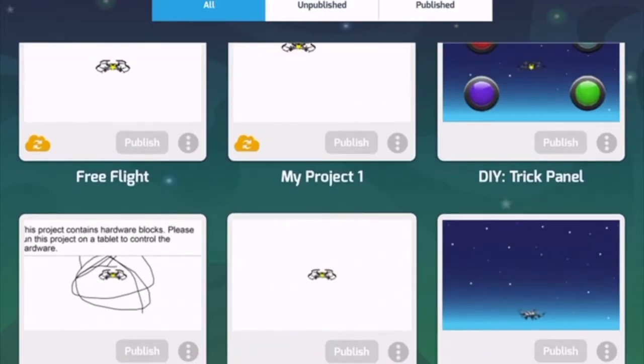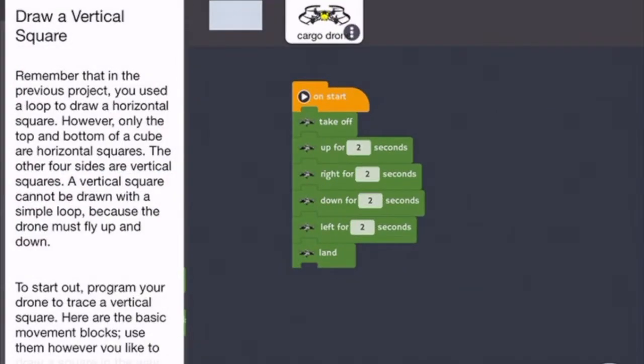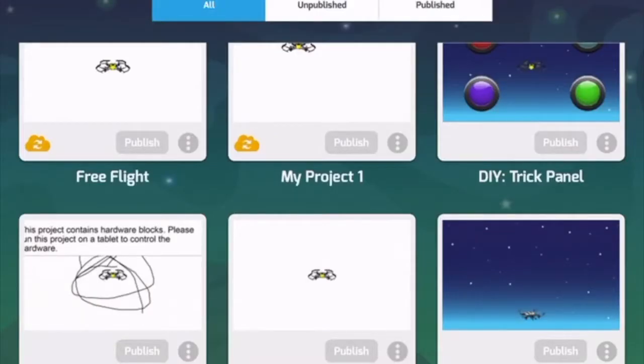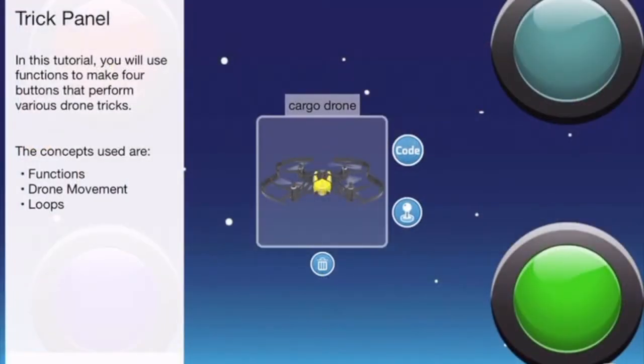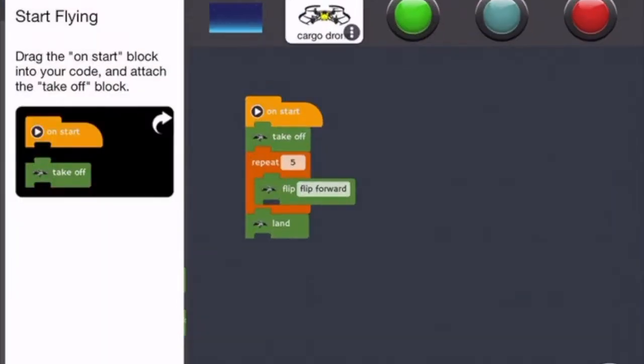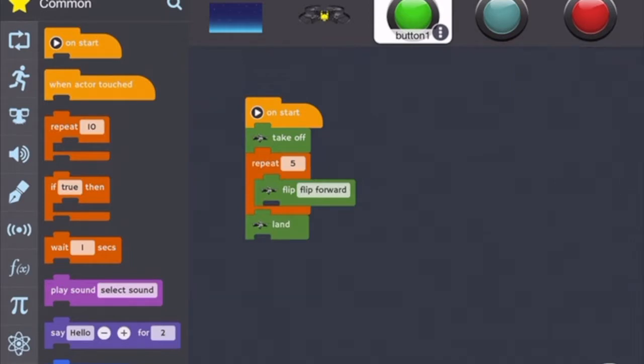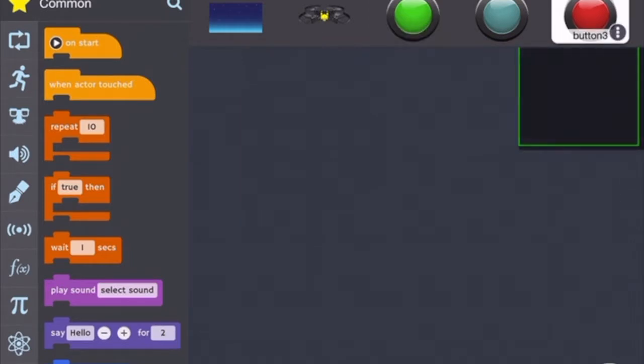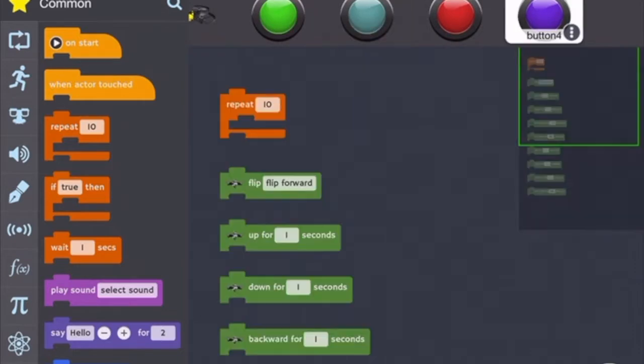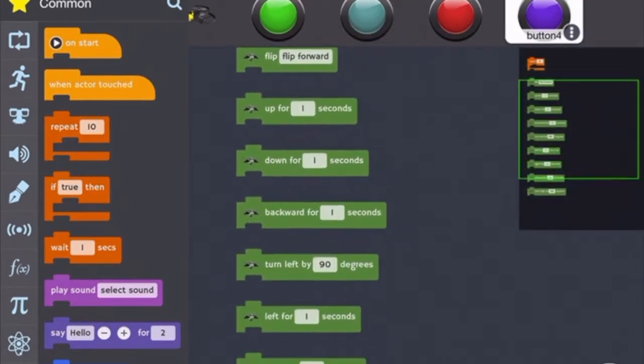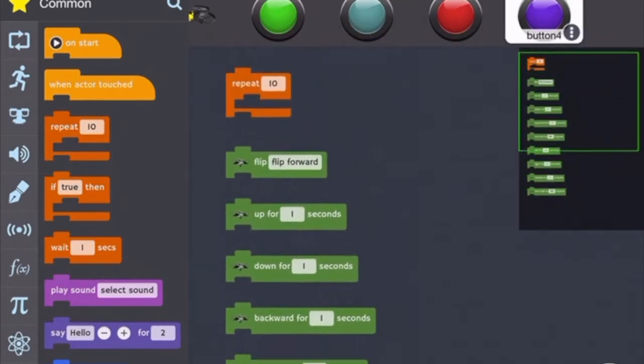I have all kinds of different codes here. Like for this one I drew a square with the drone and this one I have these buttons that I press. So for this code whenever I hit the on start button and I start hitting all these different buttons there's different code for each button. So if I hit the green one I'll do a flip five times and if I hit the purple one it'll flip and go up and down or really whatever I tell it to do.